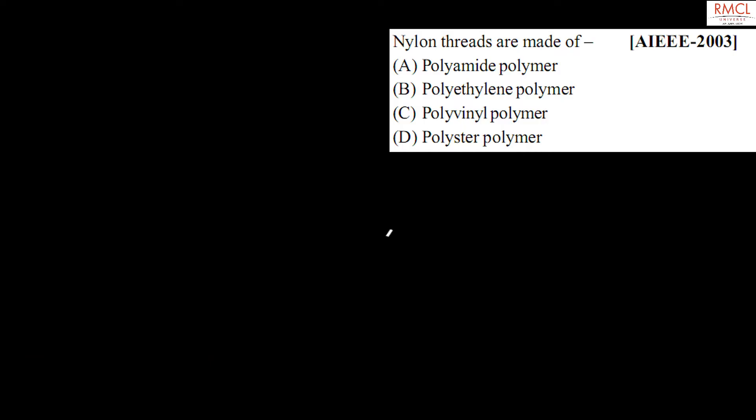The given question asked in IEEE 2003: nylon is made of what? Nylon is a polyamide and it is made by adipic acid and hexamethylene diamine.